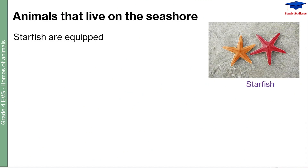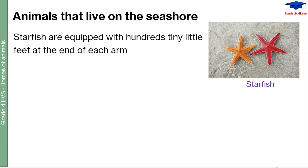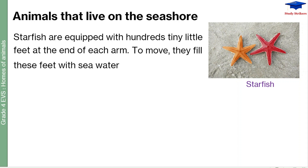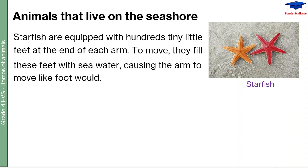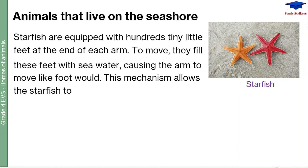Starfish are equipped with hundreds of tiny feet at the end of each arm. A starfish may have five or six arms. At the end of every arm, they have hundreds of tiny feet to move. They fill these feet with sea water, causing the arm to move like a foot. This mechanism allows the starfish to move. Many crabs also make holes and burrows as protective tunnels during high tides.